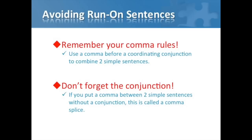I've mentioned avoiding run-on sentences a few times in this video, so I wanted to leave you with a couple of reminders. First, remember your comma rules: use a comma before a coordinating conjunction to combine two simple sentences — when you see a FANBOYS word, make sure there's a comma before it. Next, don't forget to use the conjunction. If you put just a comma between two simple sentences without a conjunction, that is called a comma splice, which is a particular type of run-on. A comma does not replace a period, a semicolon, or a comma-conjunction combination.